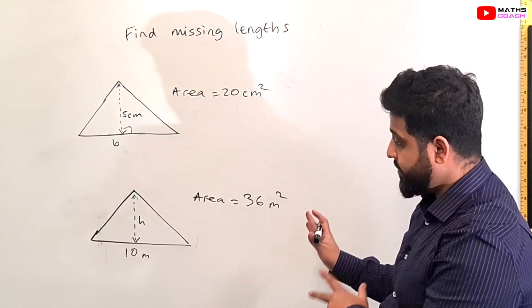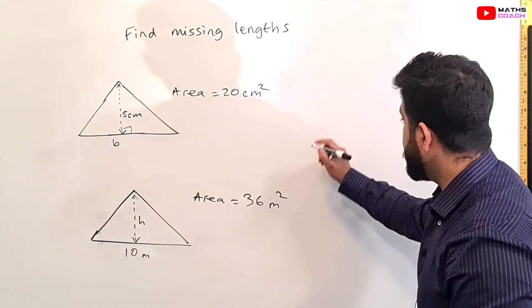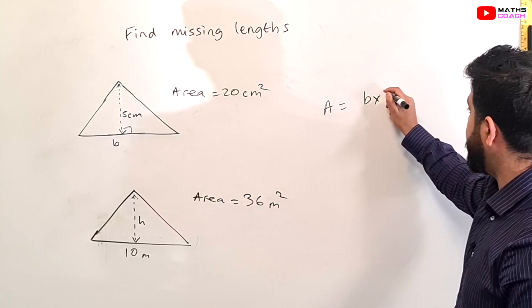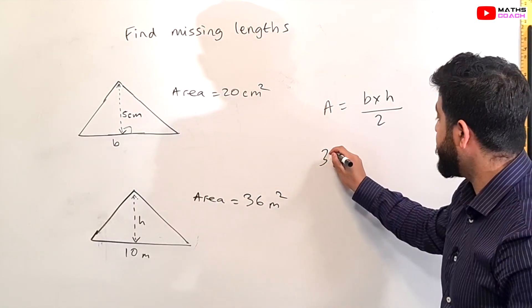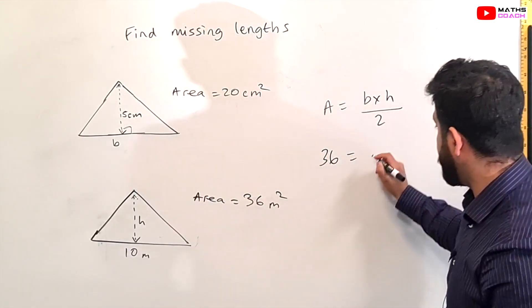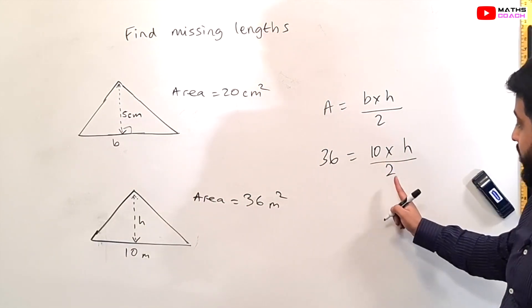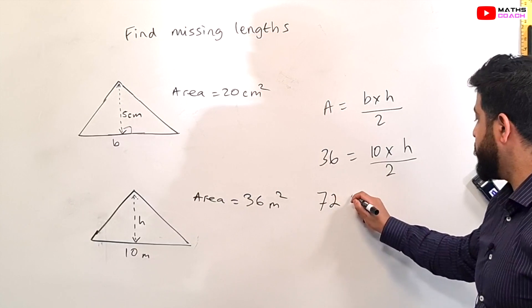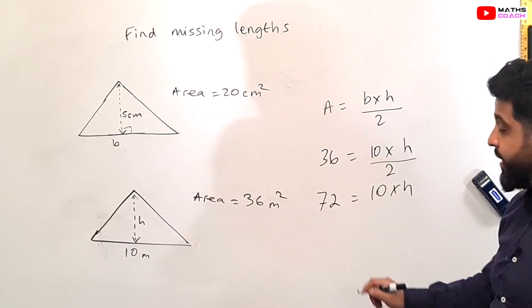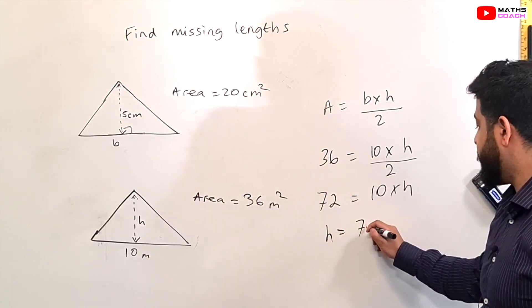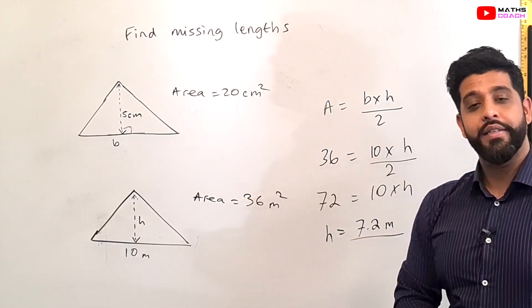Now for this one we do exactly the same except this time we have a different side or length that is missing which is the height in this case. So let's set up our equation A is equal to base times height divided by 2. This is the area of a triangle and we are given the area as 36. So 36 is equal to base which with this time we know is 10 times the height we can write h over 2. So now we multiply the 2 over here that gives us 72 is equal to 10 times h and now we're going to divide both sides by 10. So h will be equal to 7.2 and it's in meters so height is 7.2.